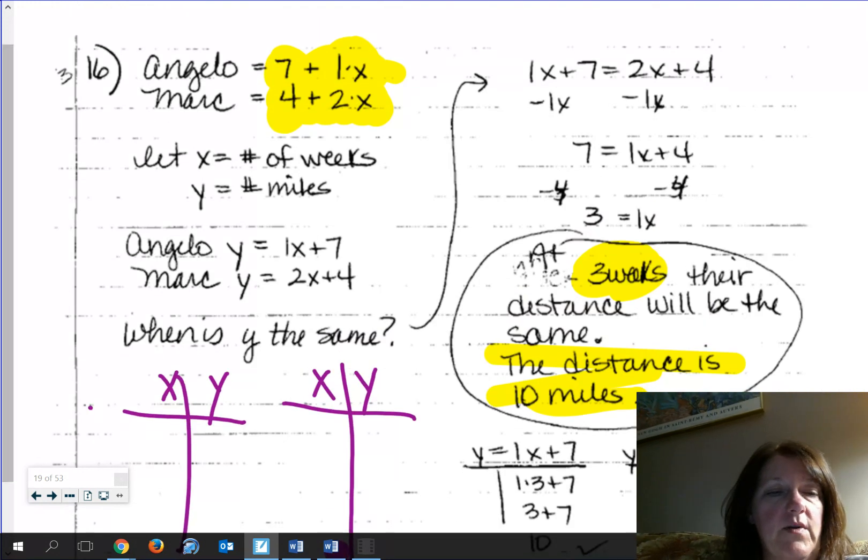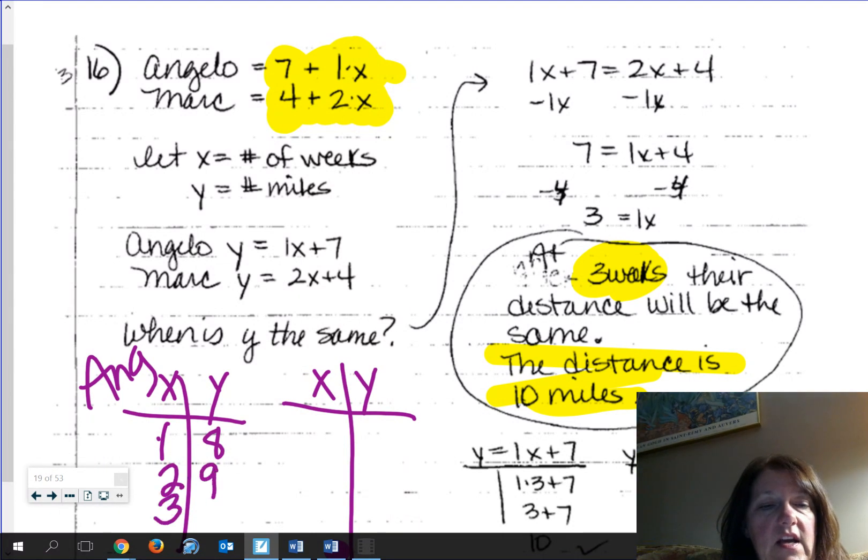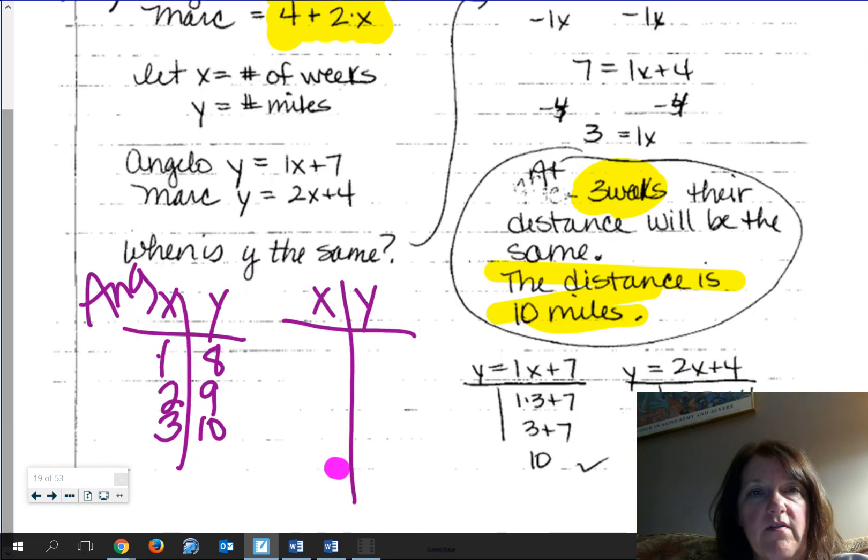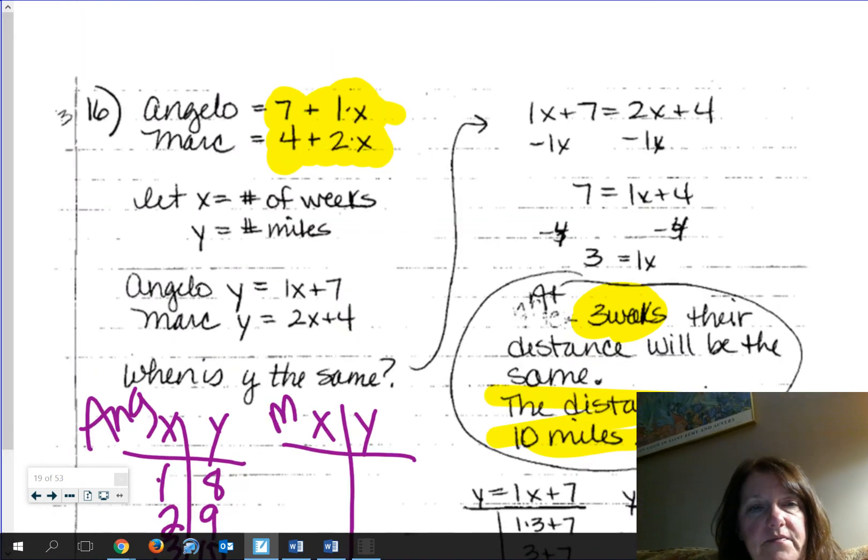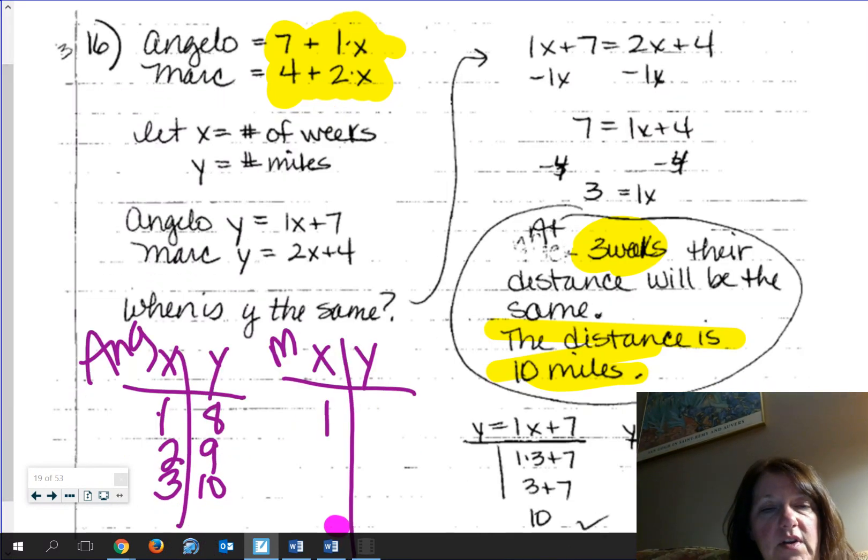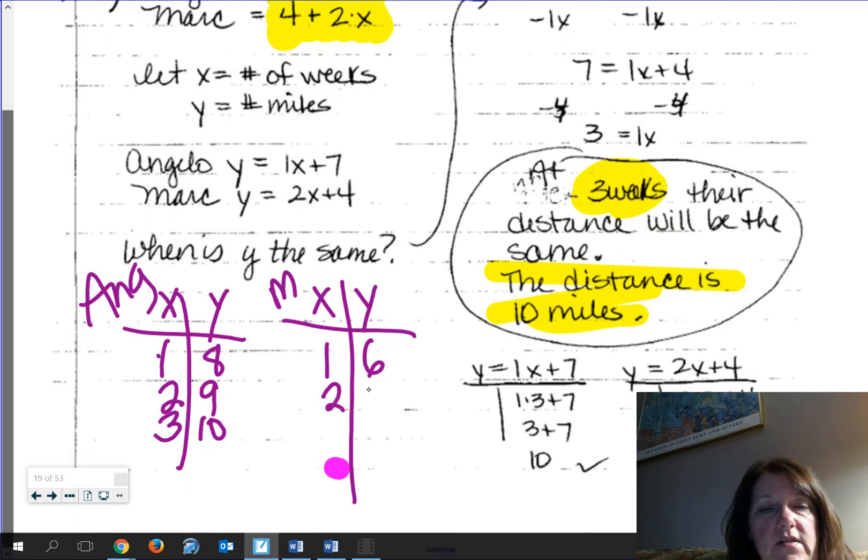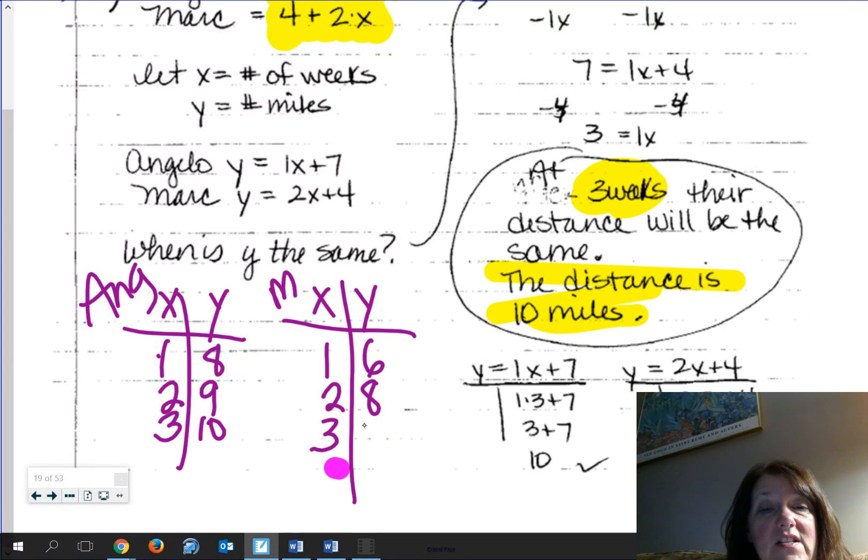So if we call this one Angelo, at one, you get eight. At two, you get nine. At three, you get ten. See how it's going up by ones? That's because it's one mile every week. Now, for Mark, he's starting out at four. So at the first week, we're going to add two more. That'll be six. At two, you have four plus four is eight. At three, you get four plus six. That's ten.